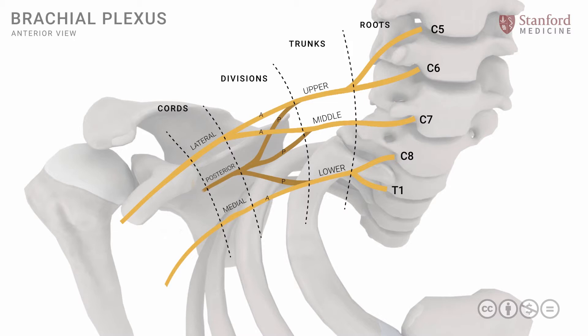From these cords we have important branches. There are many branches from the brachial plexus, and I will only review a few that have the greatest degree of clinical significance. The lateral cord gives a very important nerve known as the musculocutaneous nerve. The medial cord gives a very important nerve known as the ulnar nerve. Both the lateral and medial cords provide a contribution that unites to form another nerve known as the median nerve — note that it ends with an N, a little different from the medial cord.